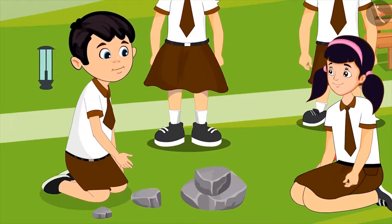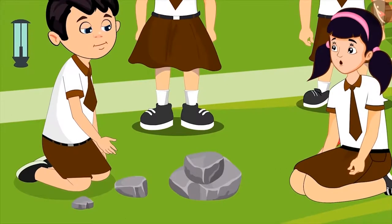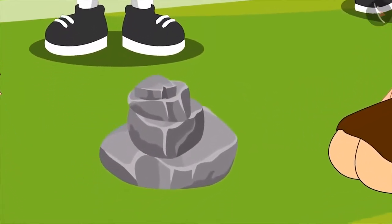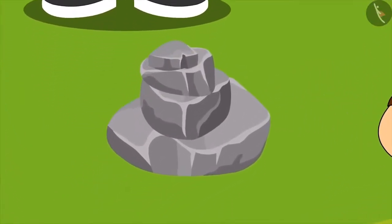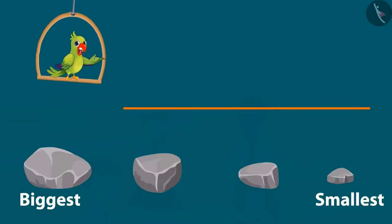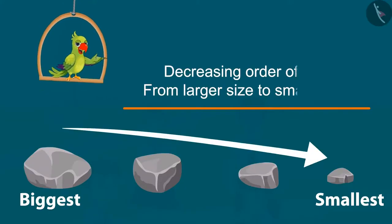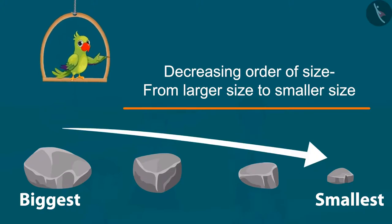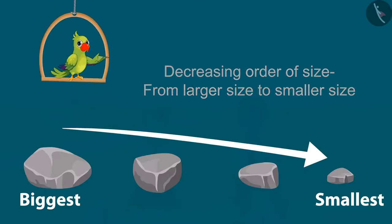Aarti instructs: out of the remaining two stones, put the bigger stone on top. Chotu places it and then adds the last stone. Their stone pile is now ready, and the children start playing seven stones. In this example, you saw how Chotu and Aarti made a pile of stones by keeping them in decreasing order of size, one by one, from large to small.